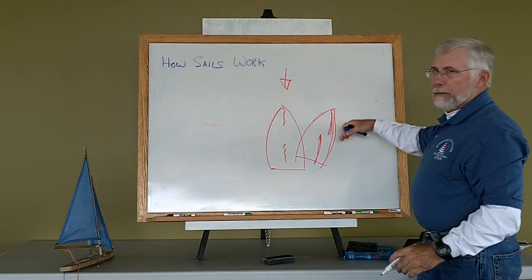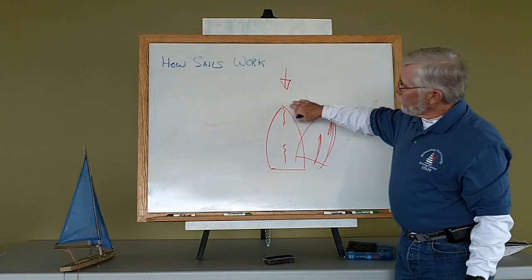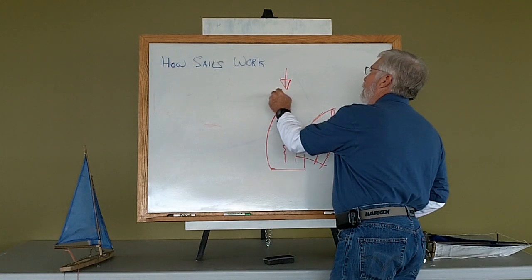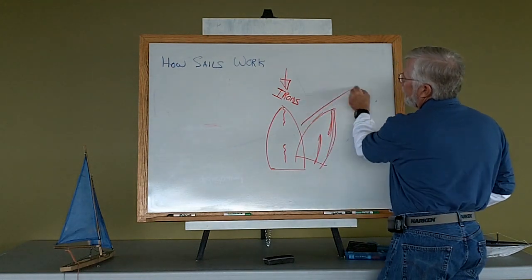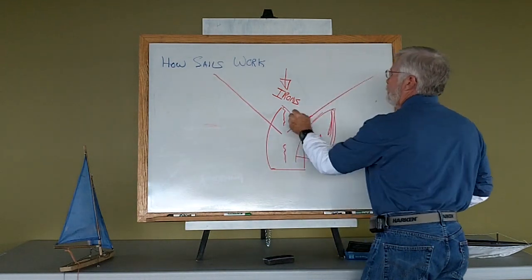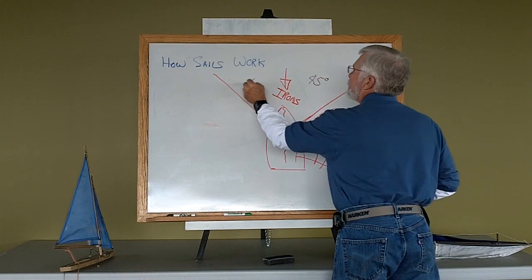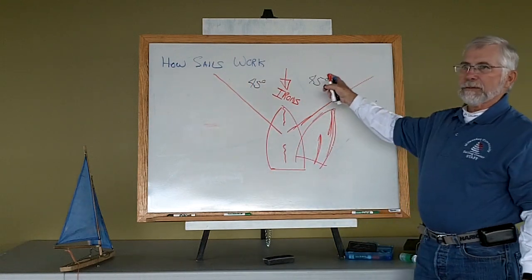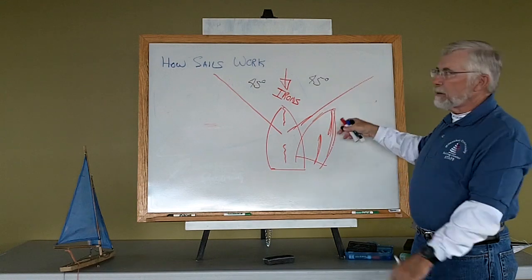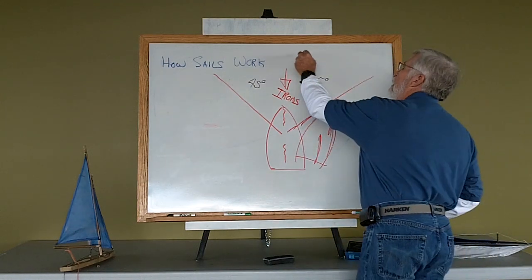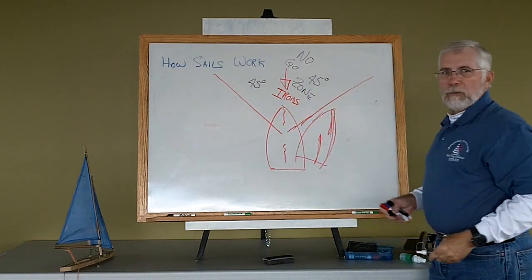Being headed directly into the wind is called being in irons, and it represents a range of about 45 degrees on either side of the wind where you can't get enough sail shape to create the lift needed. This whole range is called the no-go zone, where I really can't drive the boat.